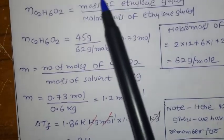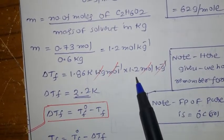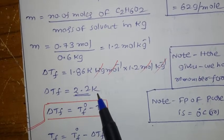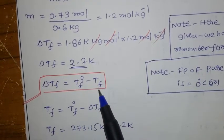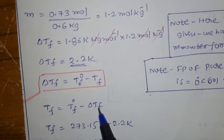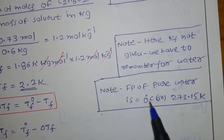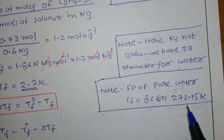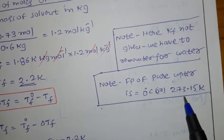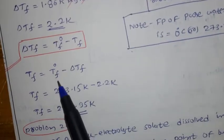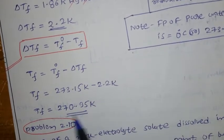Kf is already given. Substituting: ΔTf = Kf × molality = 1.86 × 1.2 = 2.2 kelvin. Now to find Tf, we use ΔTf = Tf° − Tf, so Tf = Tf° − ΔTf. The freezing point of pure water is 0°C = 273.15 K. You must remember the freezing point of water in kelvin.